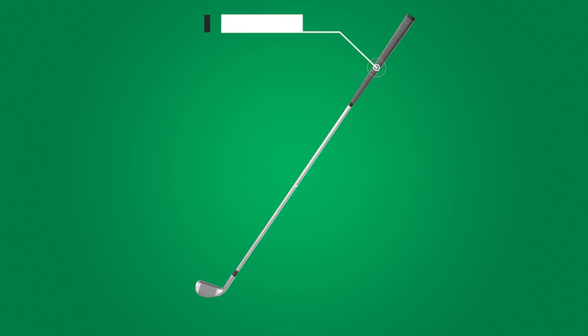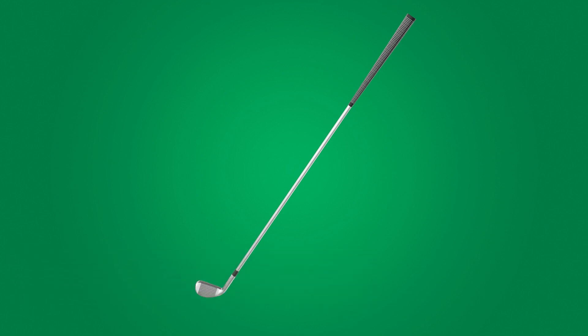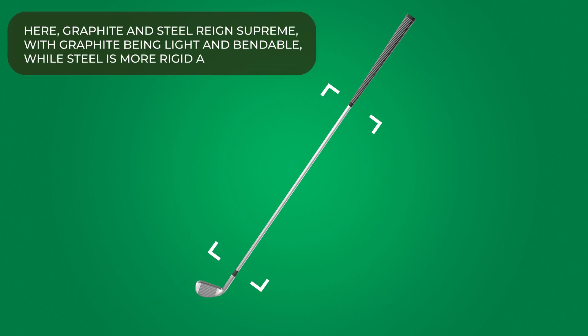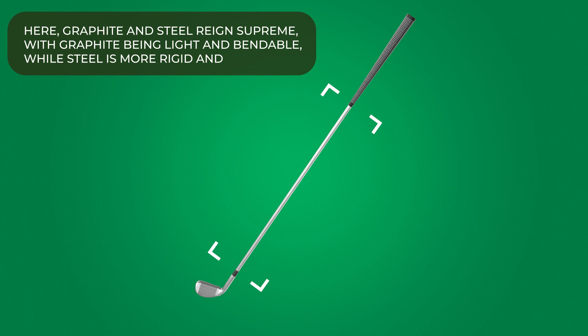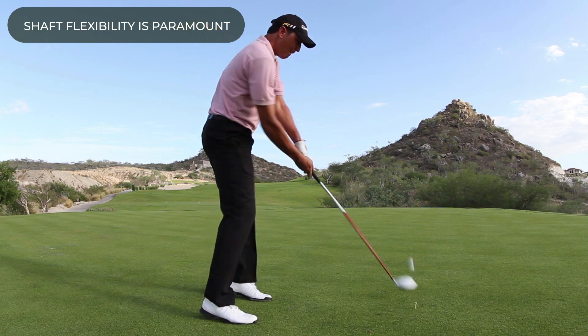A golf club comprises three main sections: the handle, the shaft, and the club head. The handle is used to grip the club, usually crafted from synthetic materials like rubber to deliver a secure, customized feel. The shaft, connecting the grip to the club head, is a slender and long component. Graphite and steel reign supreme here, with graphite being light and bendable while steel is more rigid and dense.